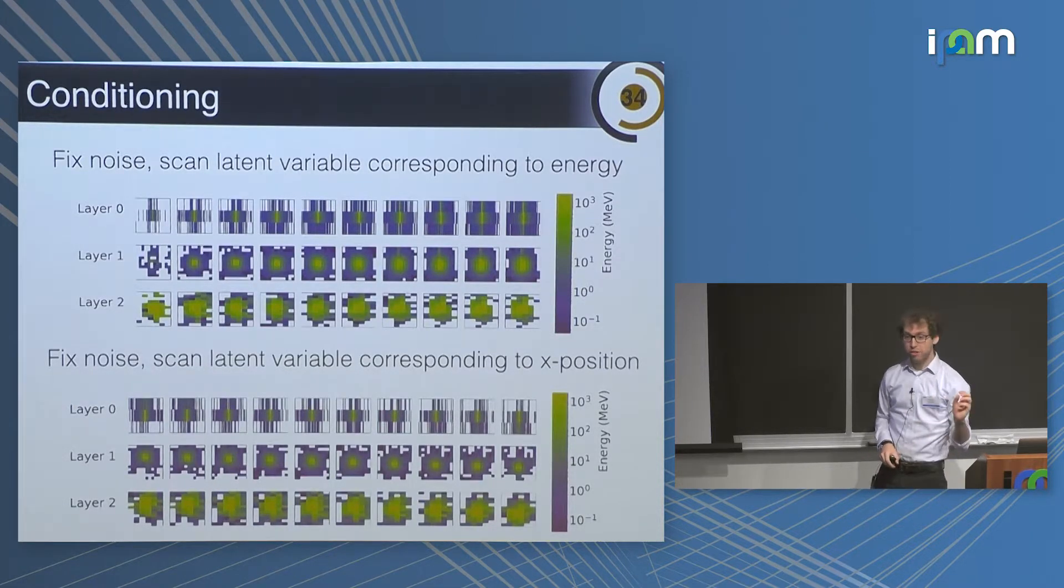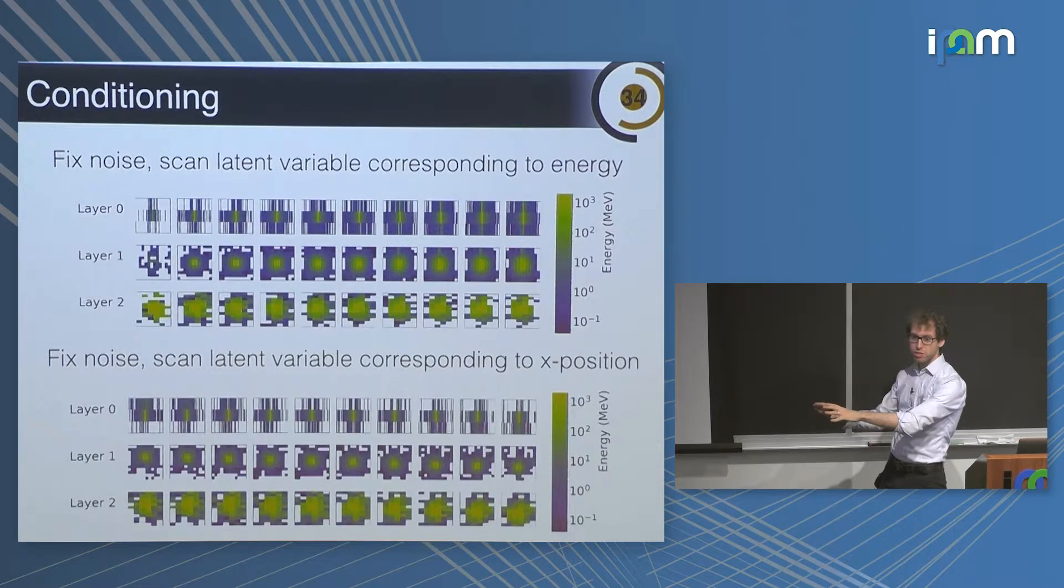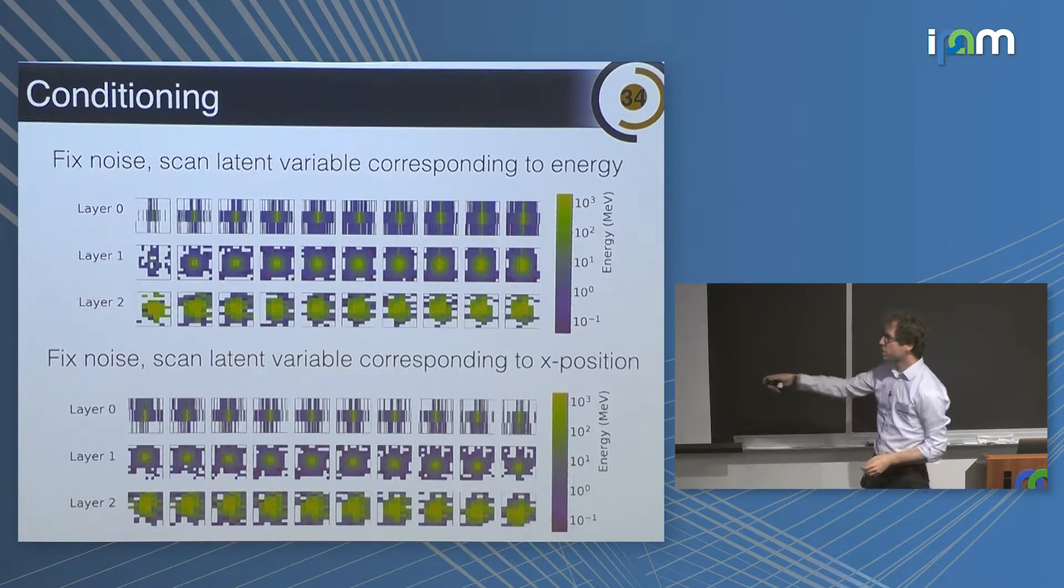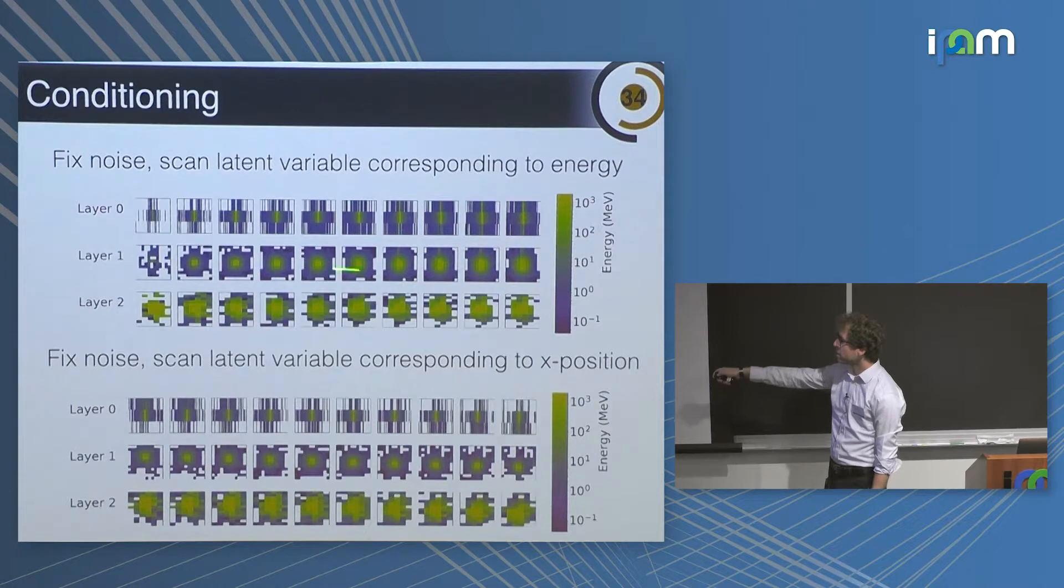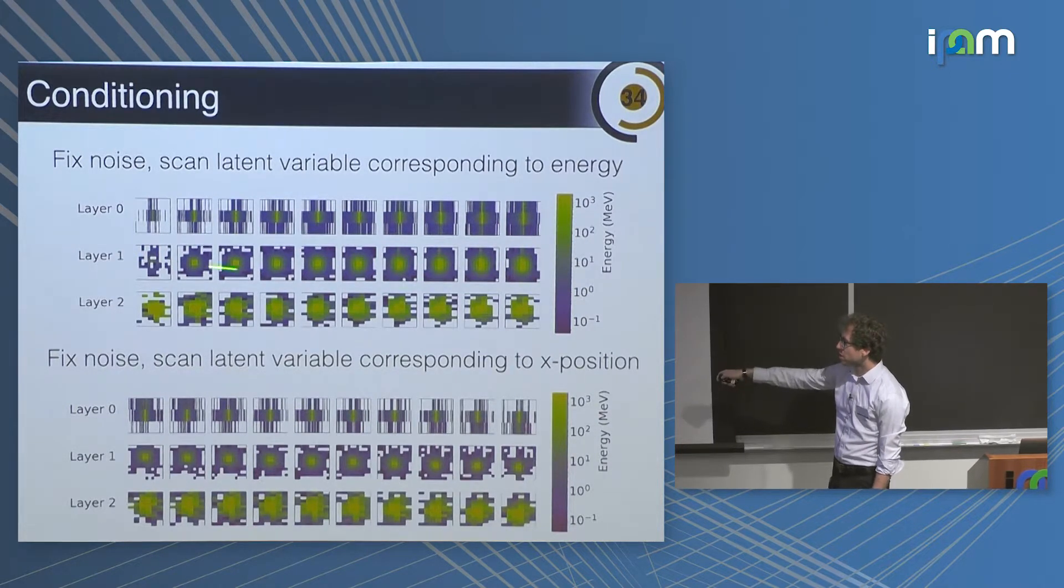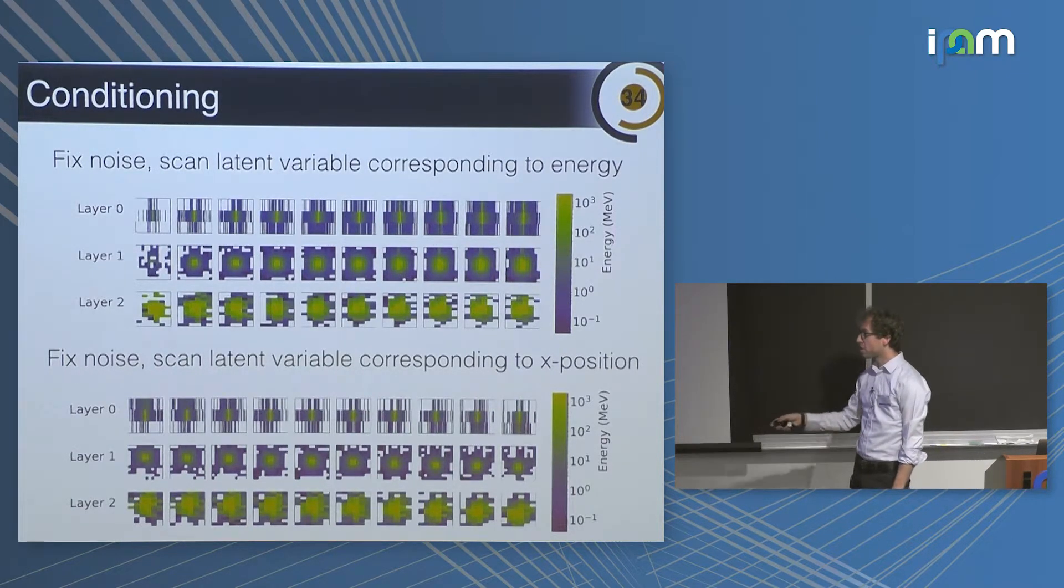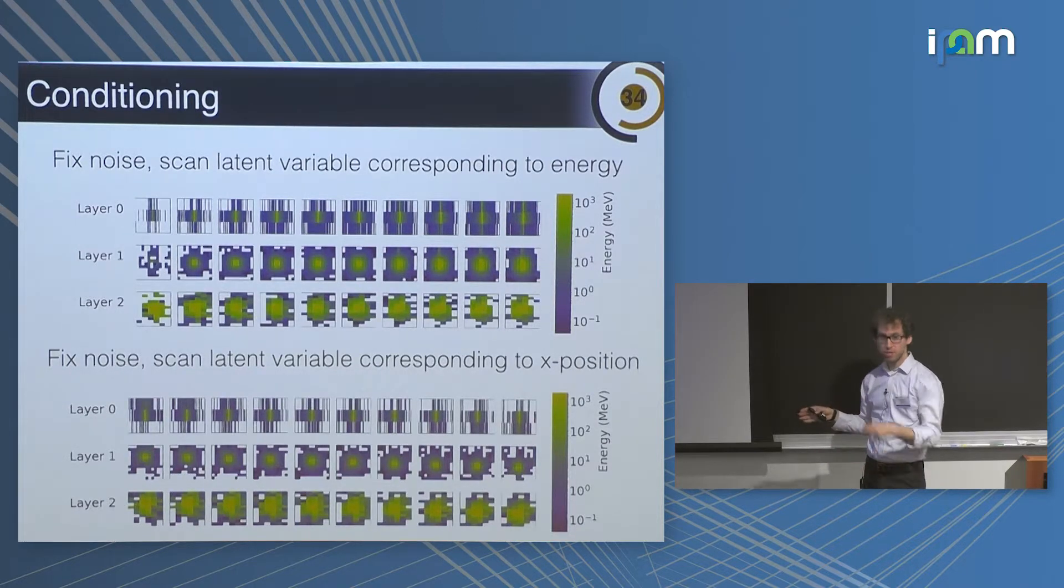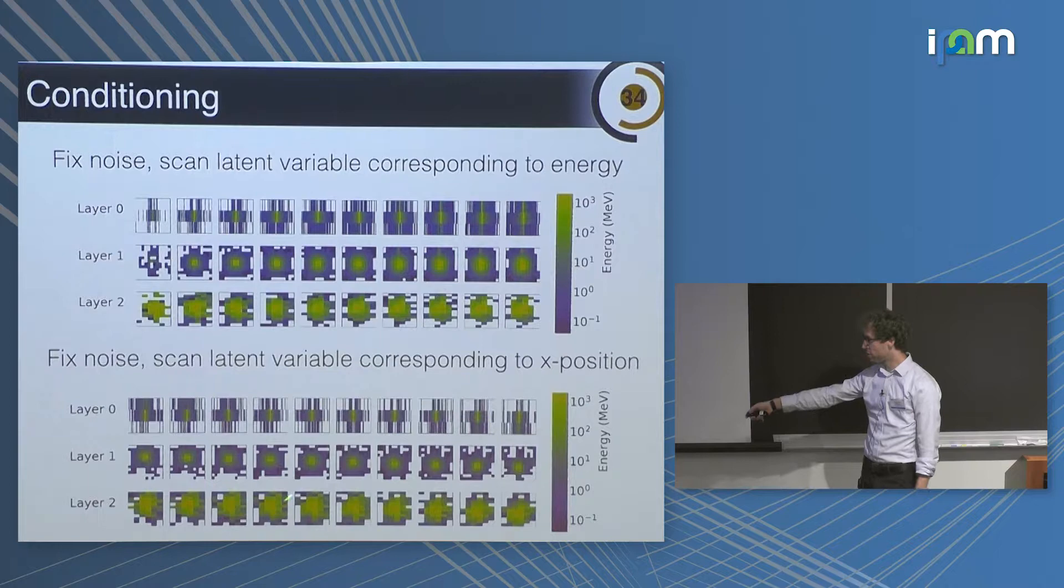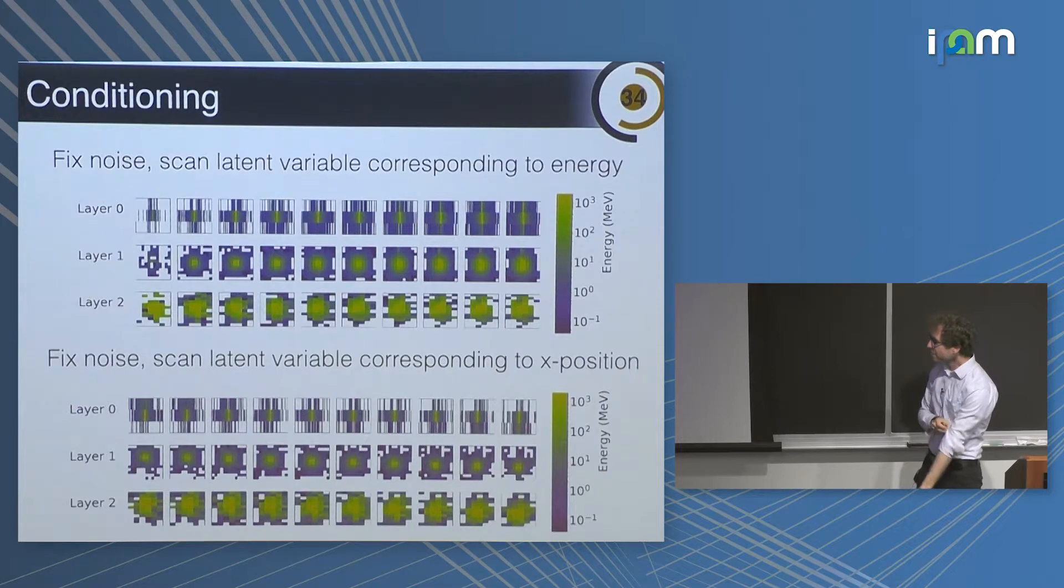I mentioned earlier that we have to condition not only on energy but also on other attributes. These top plots take one image and then just scan the energy. We fix the latent space and you can see how the images change as I change the energy. This is almost a trivial one because we baked this into the network. This one's less trivial. Here we're conditioning not only on energy but also X and Y, the position in the calorimeter. We fix the latent space and just change the X direction, which would be up and down in this plot. You can see very clearly by eye that it's learned to move the image from the top to the bottom. And this was not baked in, this is actually learned in the conditional way.